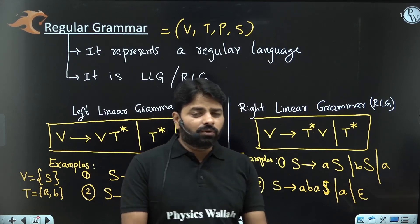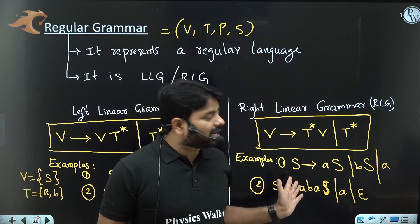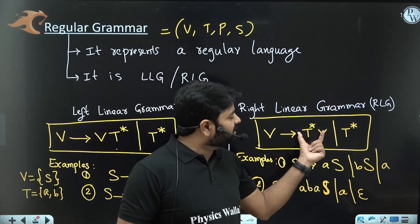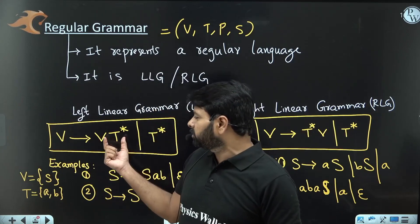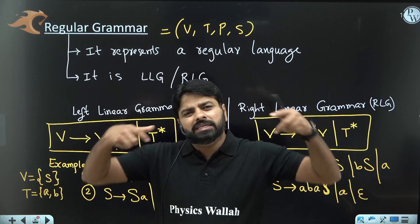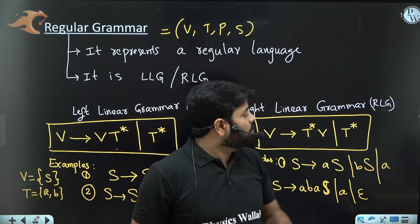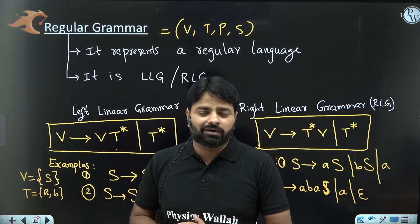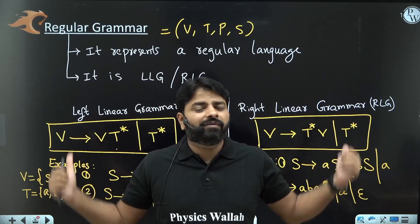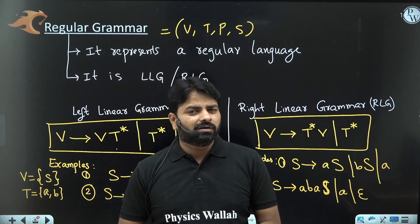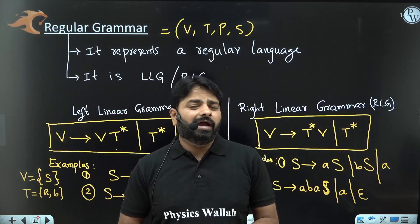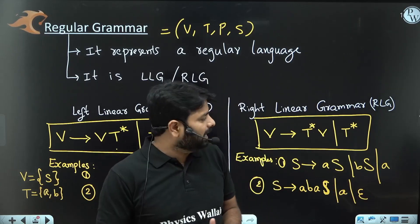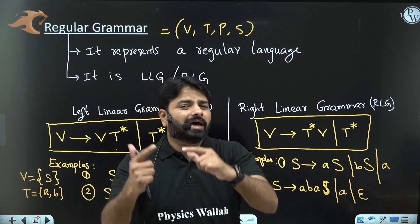These two are left linear, so they are regular. These two are right linear, so they are regular grammars. Do not ever mix the two: having a non-terminal at the last position in one production and at the first position in another production within the same grammar is not allowed. The whole grammar should satisfy the LLG rules or the whole grammar should satisfy the RLG rules. If a grammar has no non-terminals, it can satisfy both definitions simultaneously.